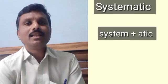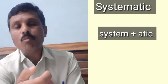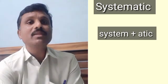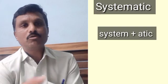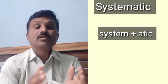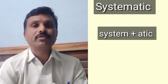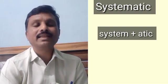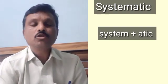If we take the word 'systematic', it has two morphemes: 'system' and '-atic', which together form 'systematic'. So 'systematic' is derived from two different morphemes — 'system' and '-atic'.